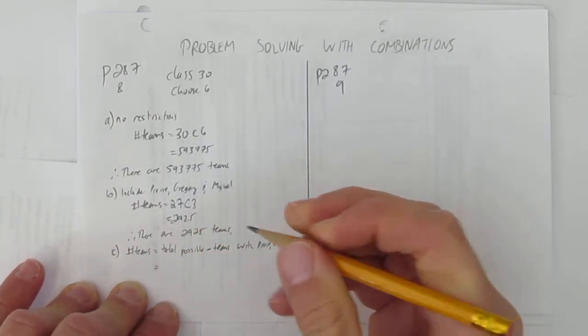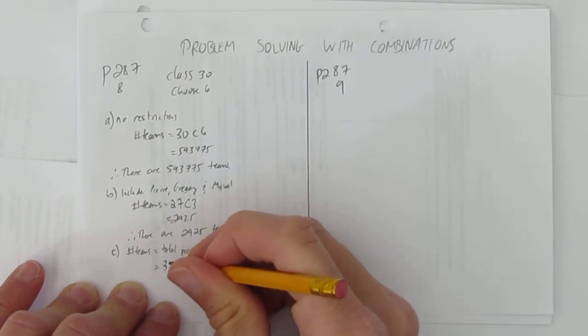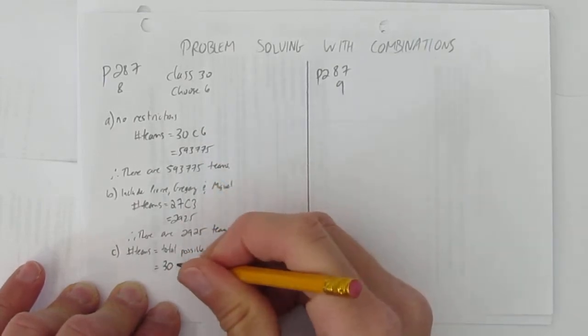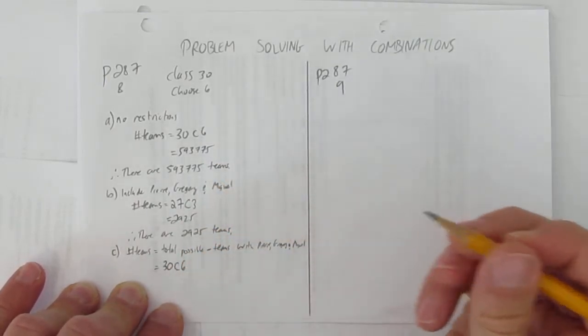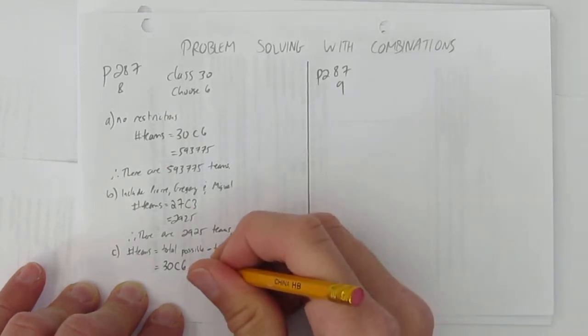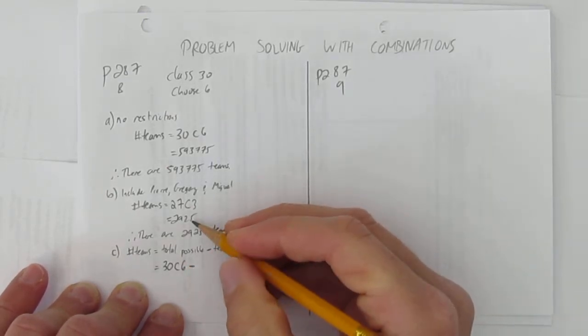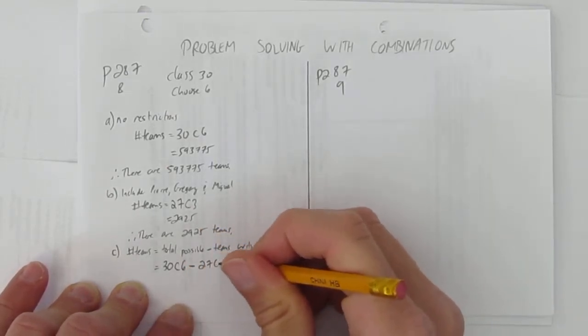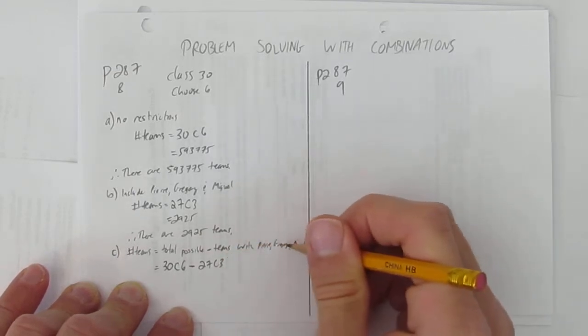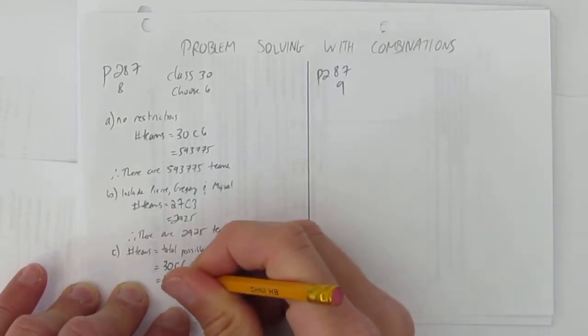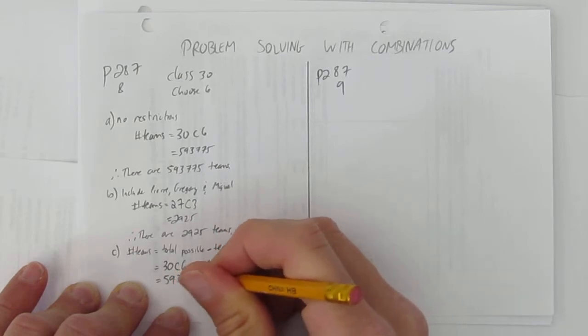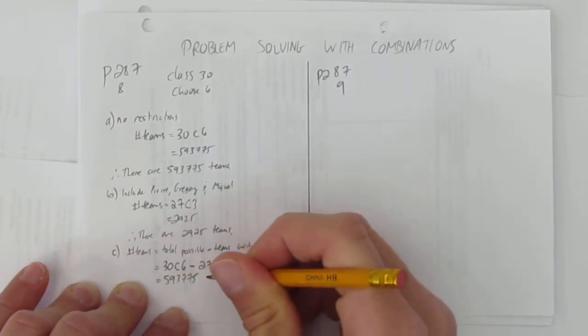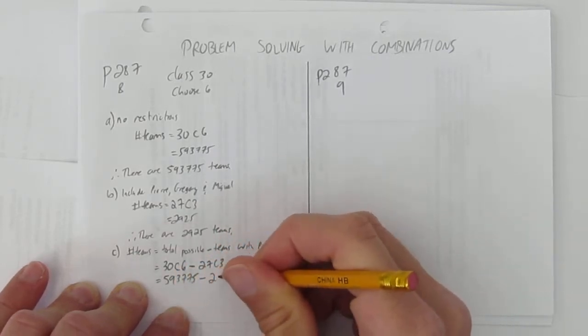What are the total possible number of teams? Well, we already calculated up there, but I'll just show the work again. There were 30 choose 6 possible teams and there were 27 choose 3 teams with Pierre, Gregory, and Miguel. In other words, there were 593,775 possible teams and I want to take away all the teams that have both Pierre and Gregory and Miguel.